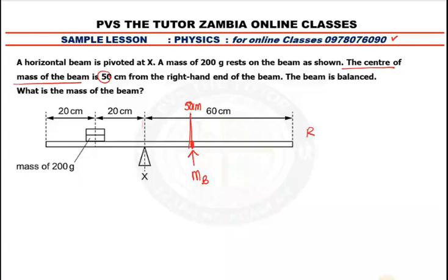Let me call it MB — mass of the beam. We are now going to apply the principle of moments. We'll use anticlockwise moments being equal to clockwise moments. Moment is force multiplied by the perpendicular distance, and that distance should be measured from the pivot.